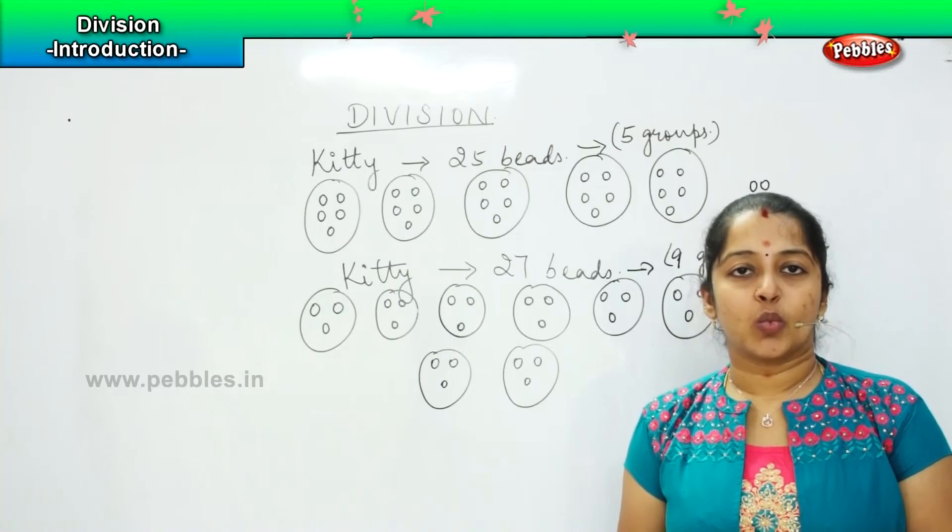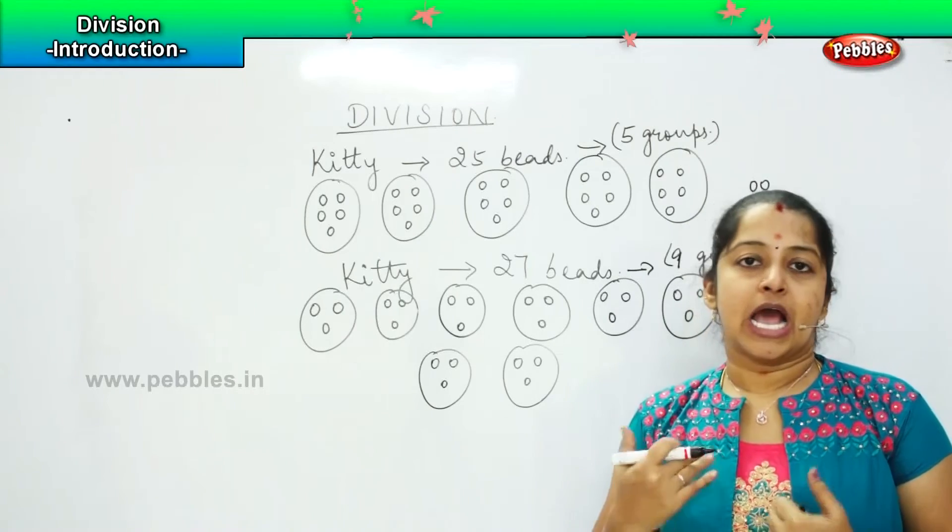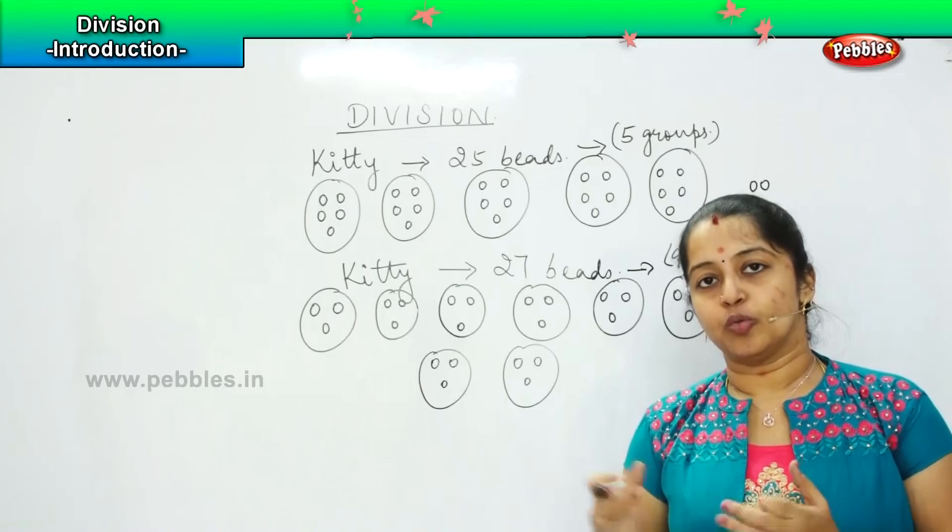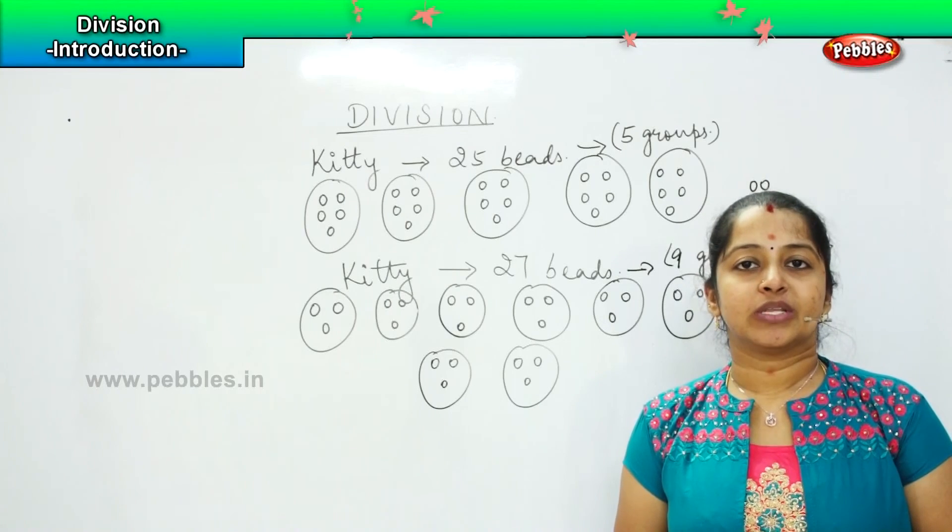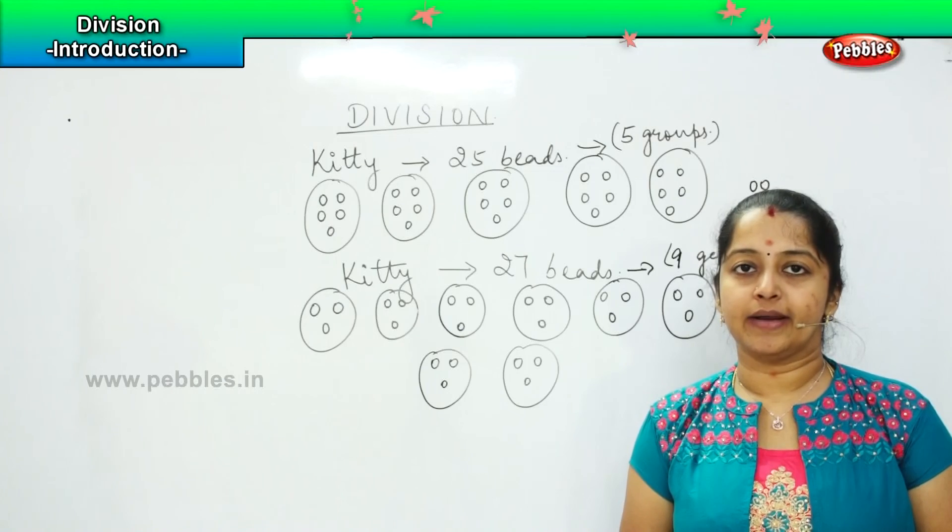So division makes our work easier and we know in a particular place how much we should accommodate and how many such particular groups have to be formed in order to distribute the given number equally. Clear? So shall we move ahead?